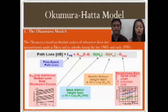And its formula for path loss: Path loss in dB equals LFS plus AMU(FC) minus G(HB) minus G(HM) minus G-area.